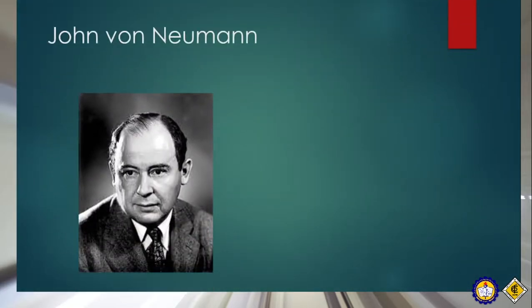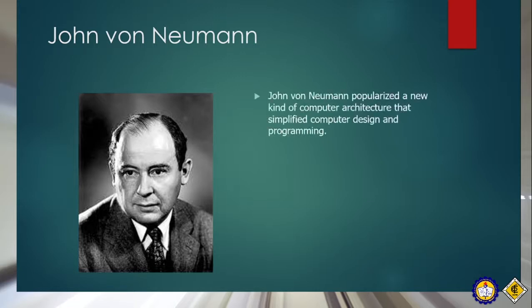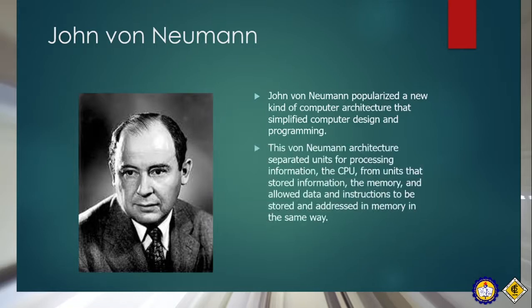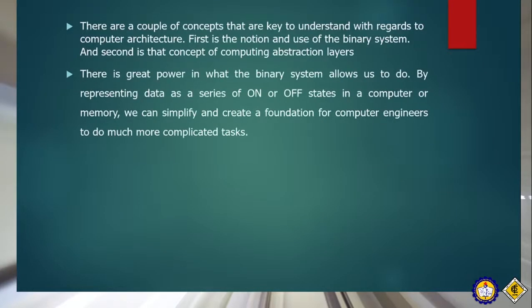Who is John Von Neumann? John Von Neumann popularized a new kind of computer architecture that simplified computer design and programming. This Von Neumann architecture separated units that process information — the CPU — from units that stored information — the memory — and allowed data and instructions to be stored and addressed in memory in the same way. There are a couple of concepts key to understanding computer architecture: first is the notion and use of the binary system, and second is the concept of computing abstraction layers.